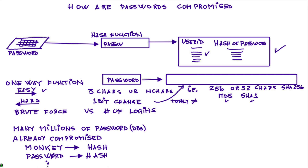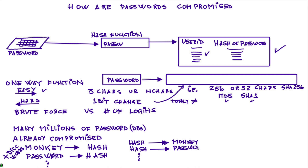You might think nobody else would use your password, but chances are somebody else in the world has, and that hash is already in the bad guy's list. They also combine this with dictionary words — they take the entire dictionary, which before computers seemed big but really isn't, and compute the hashes for everything. What they build is a table with billions of hashes and the associated password used to generate each hash. This is what is called a rainbow table.